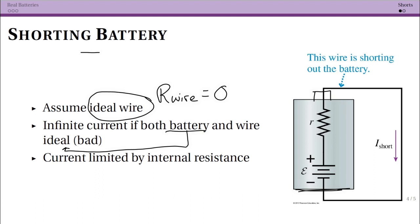Why? Well, current is going to equal to our battery terminal voltage, our terminal potential difference, divided by the resistance of the entire circuit. Now, if everything is ideal, we get to say that the terminal voltage is just EMF, but the resistance is zero.